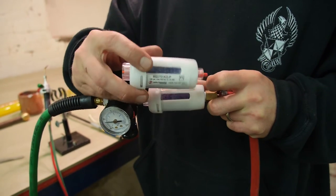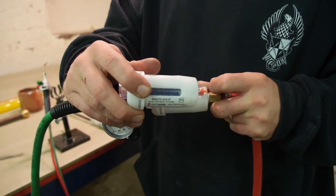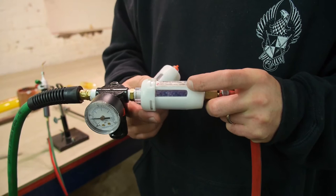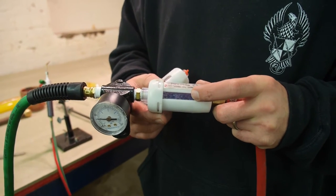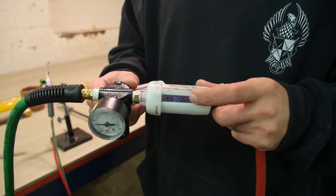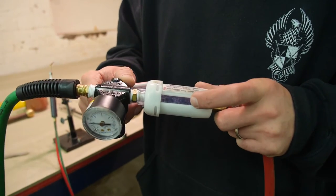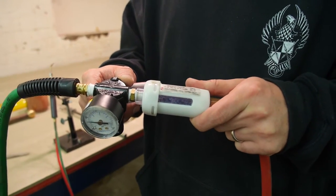The instructions with the line dryer say that these purple beads will change to pink after they've been used up. It seems clear to me that there's still plenty of life left in this dryer that I have set up.